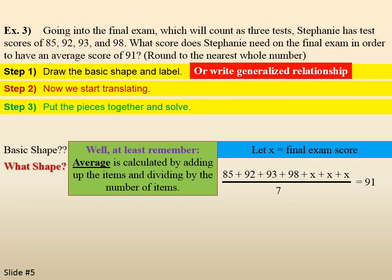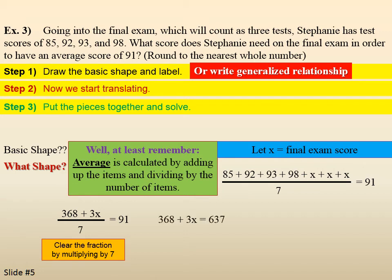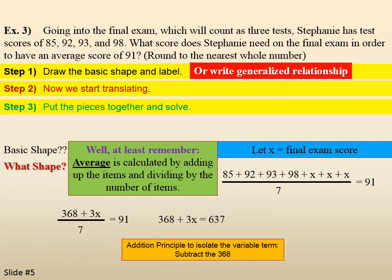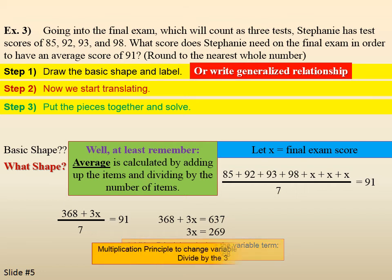Step three, put the pieces together and solve. So, I add up the four known test scores. I get 368. I add up my three x's. I get 3x over seven equals 91. Clear the fraction by multiplying by seven. And, we get 368 plus 3x equals 637. Use the addition principle to isolate the variable term. So, we're going to subtract 368 from both sides. So, we get 3x equals 269. Then, we use the multiplication principle to change the variable coefficient into a 1. We'll divide both sides by 3.